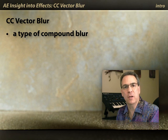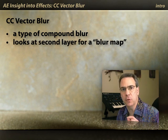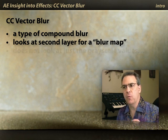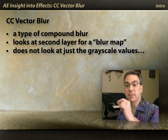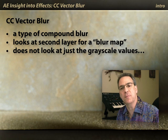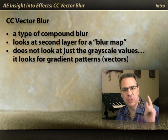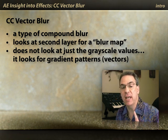Vector blur is similar to other compound blurs in that it looks at a second grayscale layer to determine how to blur the layer it is applied to. However, it's a little bit different. Rather than just looking at a grayscale value, such as saying this area gets blurred 5 pixels and that area gets blurred 10 pixels, it looks for patterns in that grayscale image, what directions gradients are going in, and that affects what direction it blurs the original image.